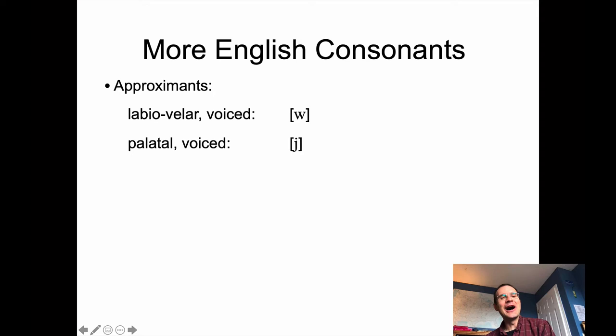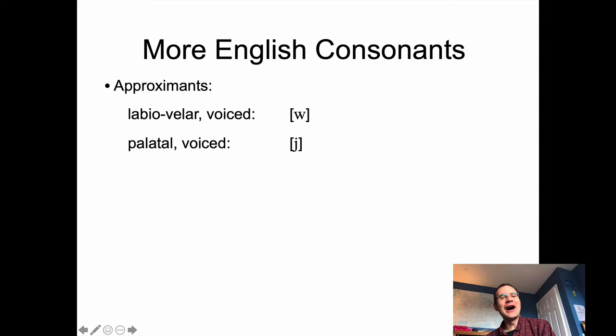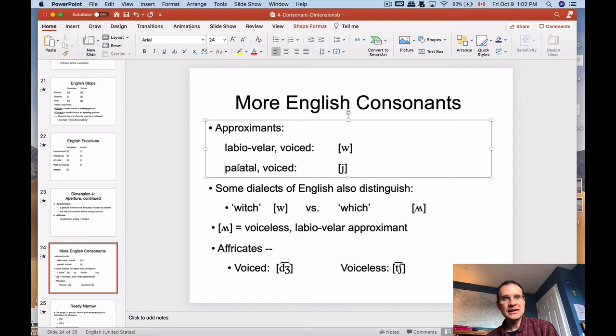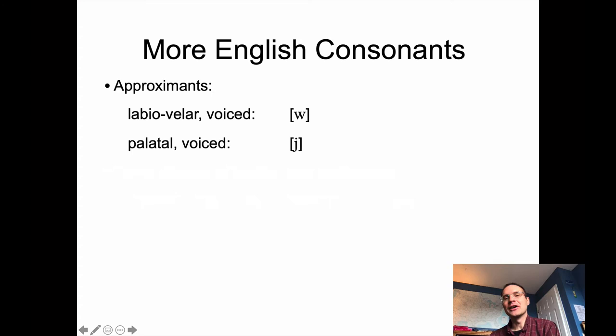English has a couple of approximants. The first is the palatal approximant, 'yod' — the Y sound. You can feel that narrowing of the vocal tract in the high palatal region. If you say 'yes' and hold the 'yeh' part, you're raising your tongue up close to the palate but not making noise. If you push your tongue a little higher, you can get turbulent noise — that would be a palatal fricative rather than an approximant. We just get the palatal approximant in English.